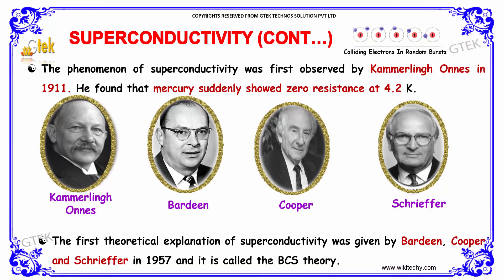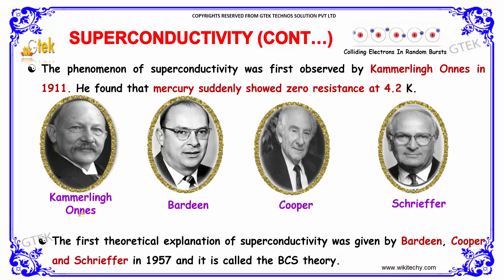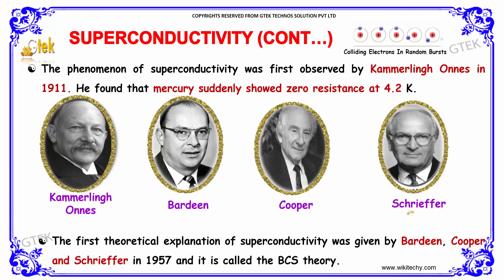The phenomenon of superconductivity was first observed by the great physicist Kamerling Onnes in 1911. He found that mercury suddenly showed zero resistance at 4.2 Kelvin. The first theoretical explanation of superconductivity was given by Bardeen, Cooper, and Schrieffer in 1957, and it is called the BCS theory.